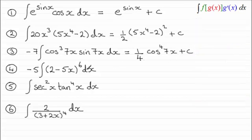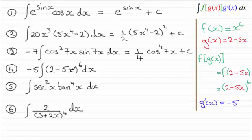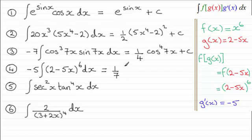With number 4, I have g(x) as being 2 minus 5x. I notice that if I differentiate g(x), I get minus 5, which is the constant here. My f(x) would be essentially x to the power 6. Integrating x⁶ is going to give 1/7 x⁷. But x is replaced with g(x), so it's 2 minus 5x, giving (2 minus 5x) all to the power 7, plus the constant of integration, c.